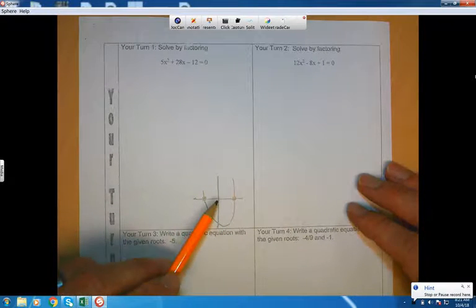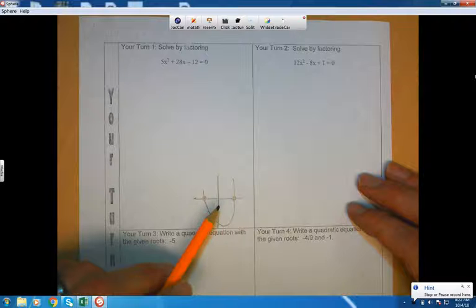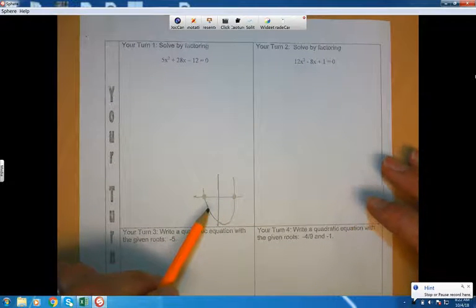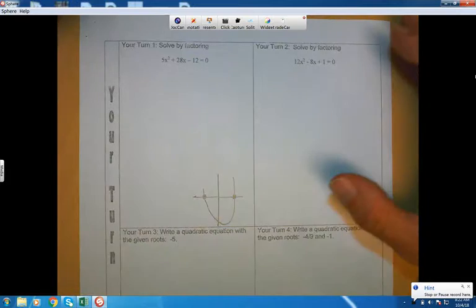We are going to do that without graphing it. So last chapter we would have just graphed it and used our graphing calculator to figure out where it hits the ground. We are today not going to do this. We're going to use factoring.